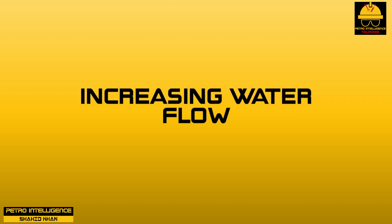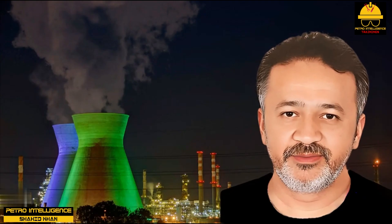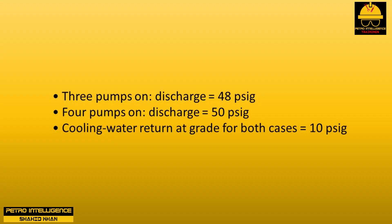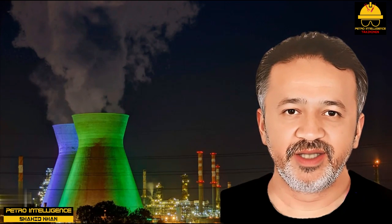Increasing water flow: your cooling tower basin is likely served by a number of circulation supply pumps. Putting an additional pump online does very little to increase the combined pump discharge pressure, meaning total water flow has not increased significantly. For example: three pumps give 48 psig discharge, four pumps give 50 psig discharge. With a cooling water return of 10 psig, the delta P for three pumps is 38 psig and for four pumps is 40 psig.